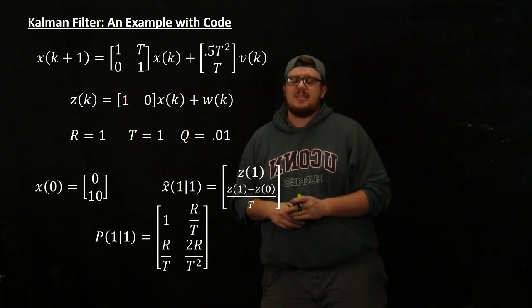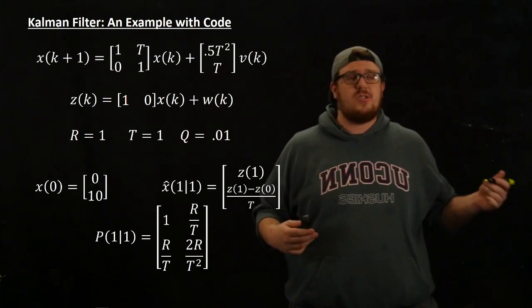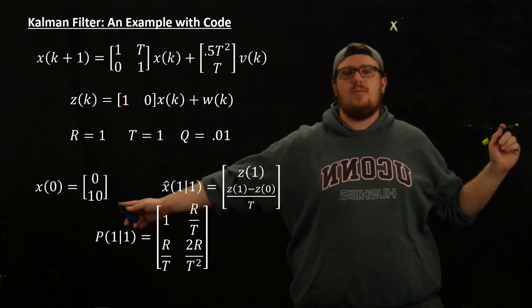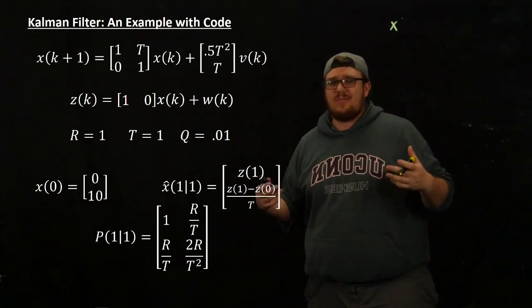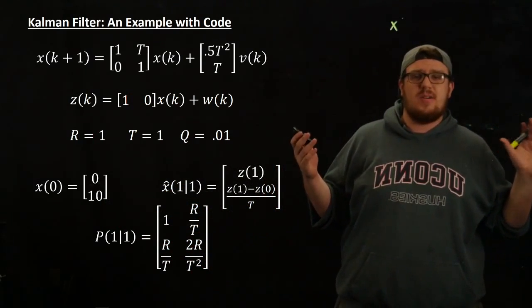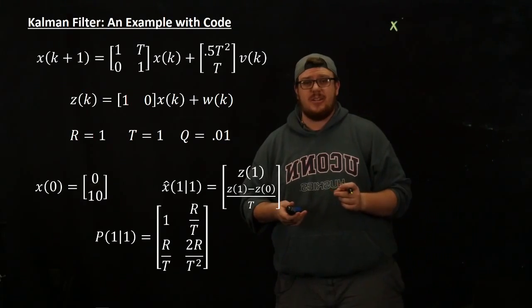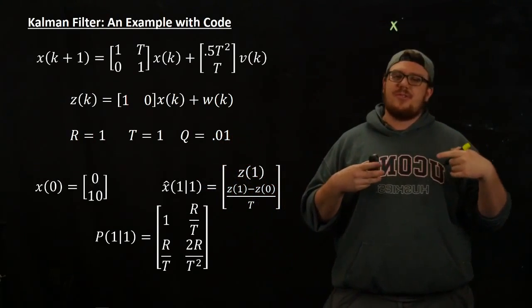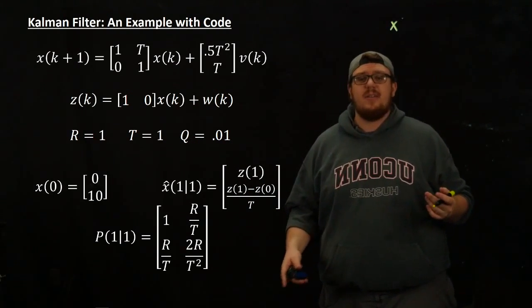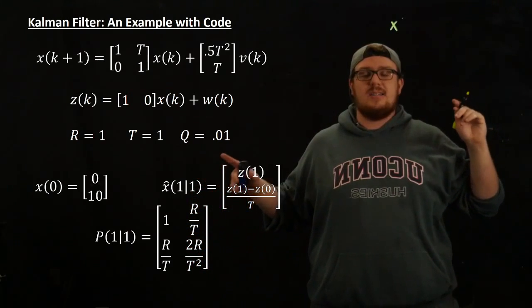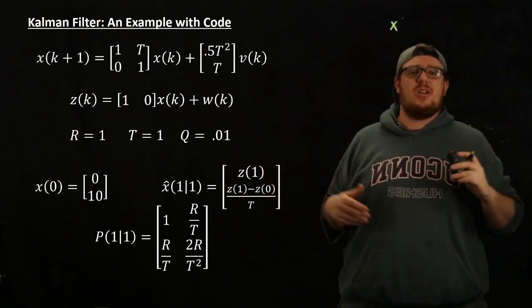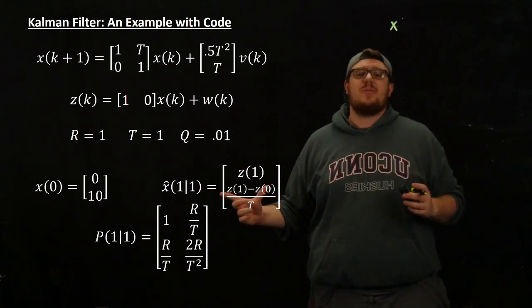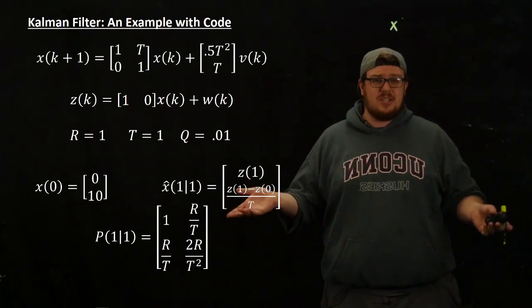So now in order to initialize this, we need an initial guess. So we know that x0 is going to be equal to 0, 10. So we need a guess for initializing this. We need an x(0|0) or what I call here x(1|1) because we're going to be doing a two point initialization. So in order to get a velocity guess, what we're going to do is we're just going to take the position at one time, the position at the previous time, subtract and divide by the time difference. So x(1|1) here is going to be, we're going to guess the position at time one is our measurement for the position at time one, and we're going to guess that the velocity is the difference between our two positions at one and zero divided by t. That's called a two point initialization.